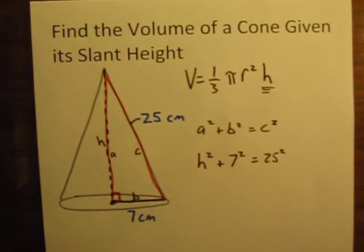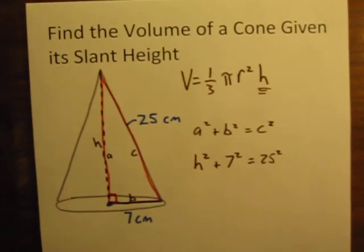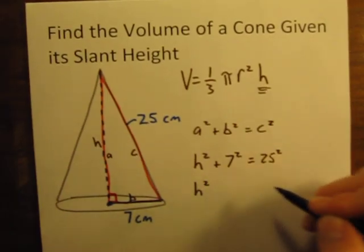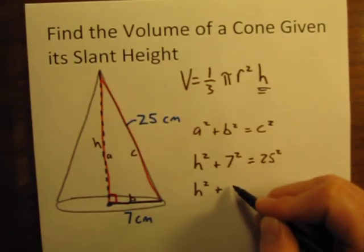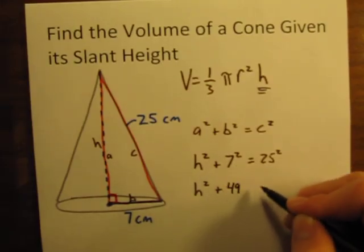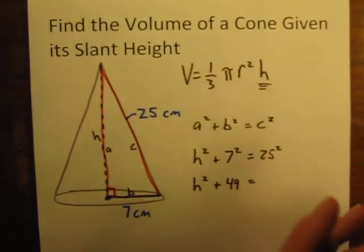And now we can calculate it. We can calculate what h is going to be. So first let's square the numbers that we know. Still don't know h. But 7 squared, 7 times 7 is 49. 25 squared, 25 times 25.